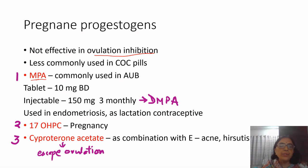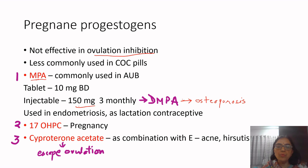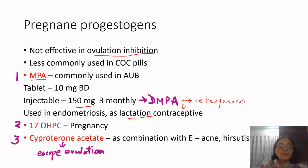Injectable medroxyprogesterone acetate — depot MPA — is available as 150 mg given every three months. However, if given for more than one year, there is a risk of osteoporosis. It is mainly used as a contraceptive during lactation and also in endometriosis as a cheaper option compared to newer, more expensive progestogens.